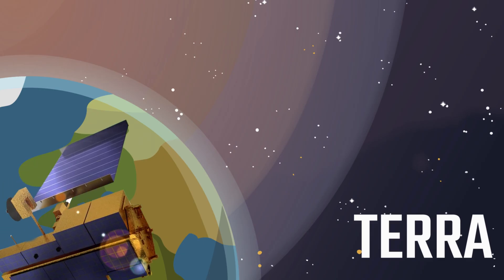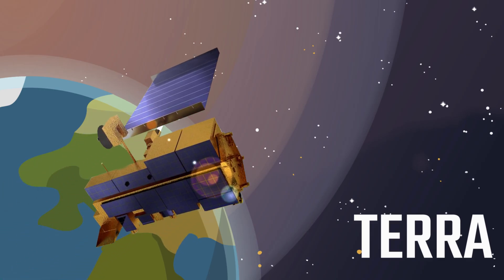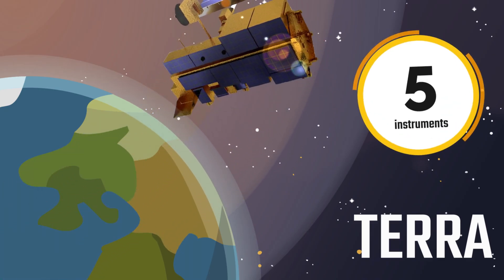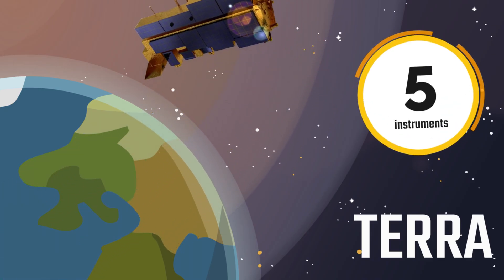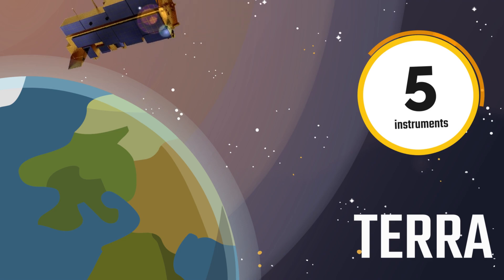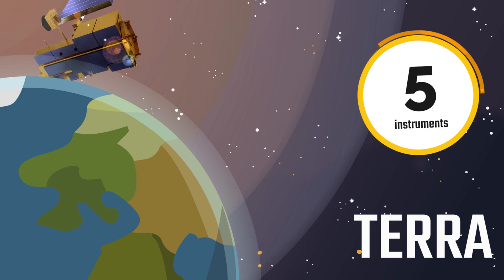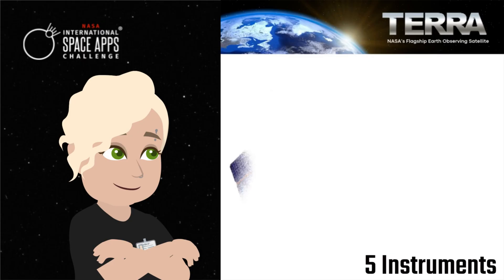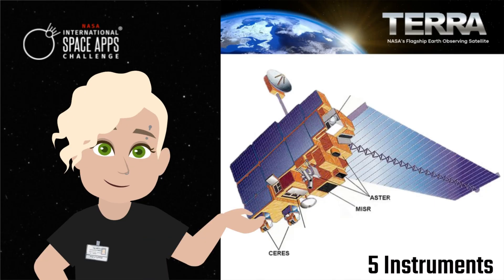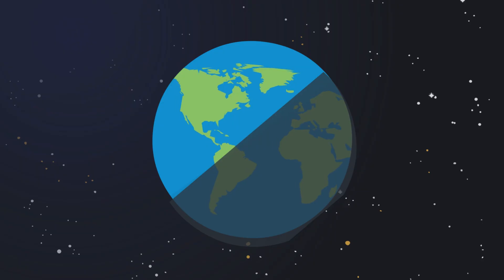First, some background. Terra was launched in 1999 with five different instruments on board, most designed to take imagery at the same time. Terra's five instruments are Aster, Ceres, Miser, Motus, and Moppet.